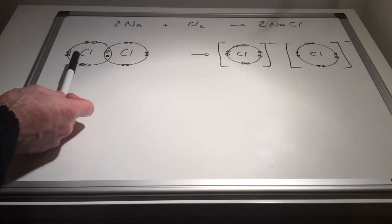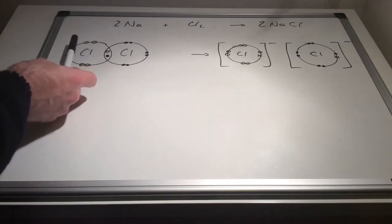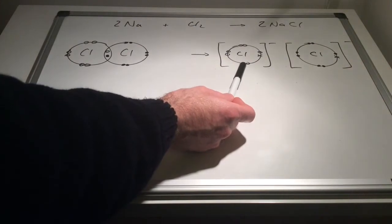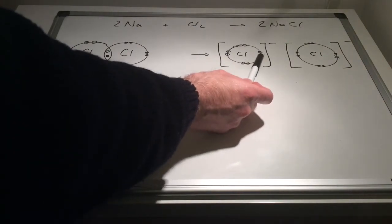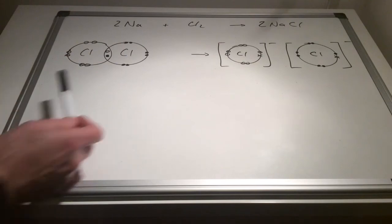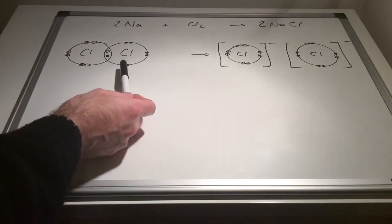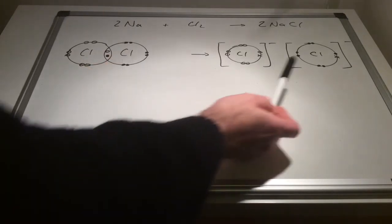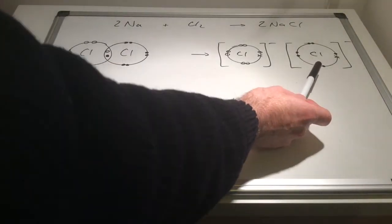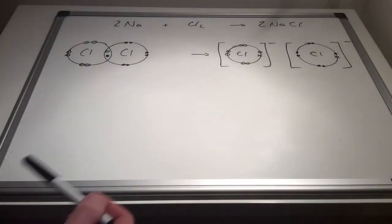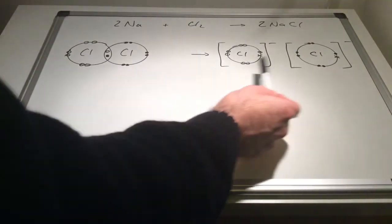This left hand chlorine with its unshaded circles for electrons has become a chloride ion. So that cross there is an electron from one of the sodium atoms. The right hand chlorine in the molecule with its shaded electrons has also become a chloride ion and that's received the other electron from the second sodium atom. And so we've generated 2 chloride ions.